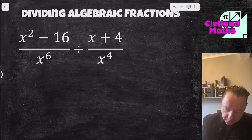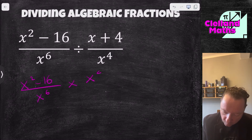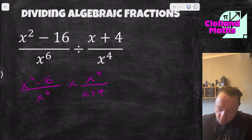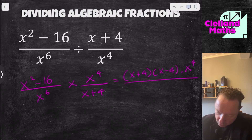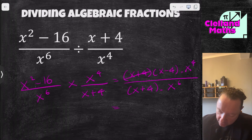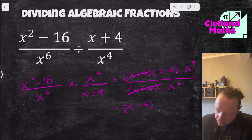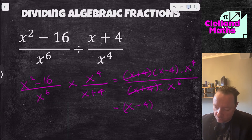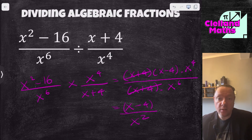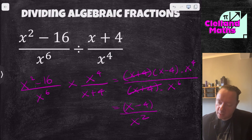Next: (x²-16) over x⁶ divided by (x-4) over (x+4). Divide becomes times, giving times (x+4) over (x-4). Factorise x²-16 as a difference of two squares: (x+4)(x-4). The (x+4) on top cancels with (x+4) on the bottom. For the x terms: x⁴ on top and x⁶ on the bottom — by laws of indices, 4 minus 6 gives x to the power of minus 2, or equivalently x² on the bottom. Answer: (x-4) over x².